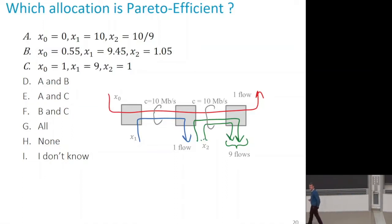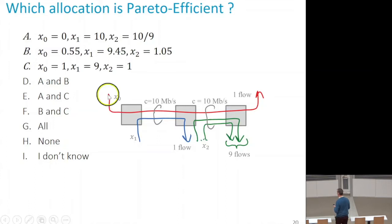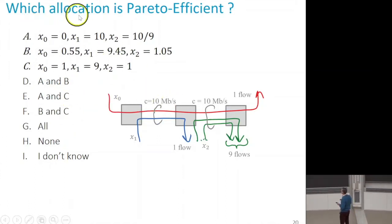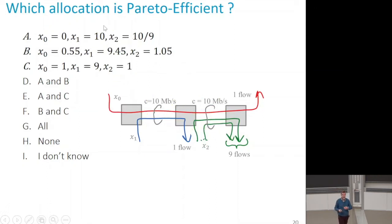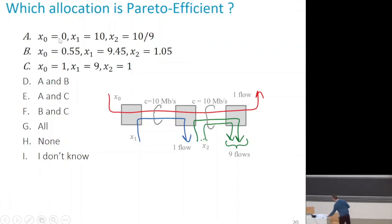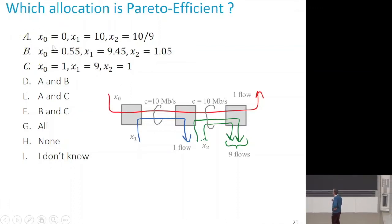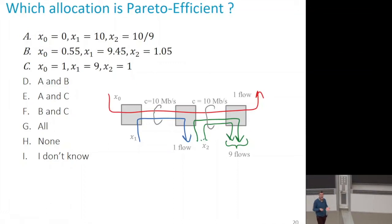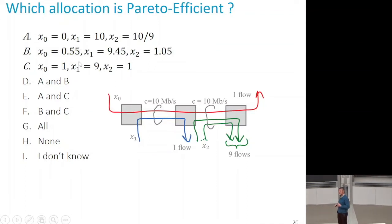For this system, all three allocations A, B, and C are Pareto efficient. They all satisfy: x0 plus x1 equals 10, and x0 plus 9·x2 equals 10. But which allocation should a congestion control mechanism choose? The first one probably not, because it shuts down the first source entirely. Between B and C — which one is better? Is there any reason to give B rather than C? This is the question of fairness.